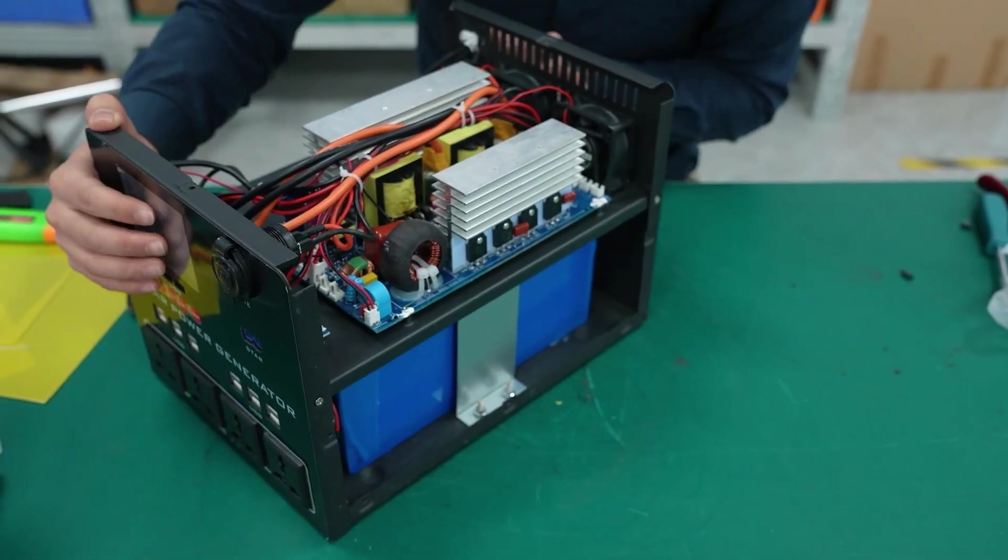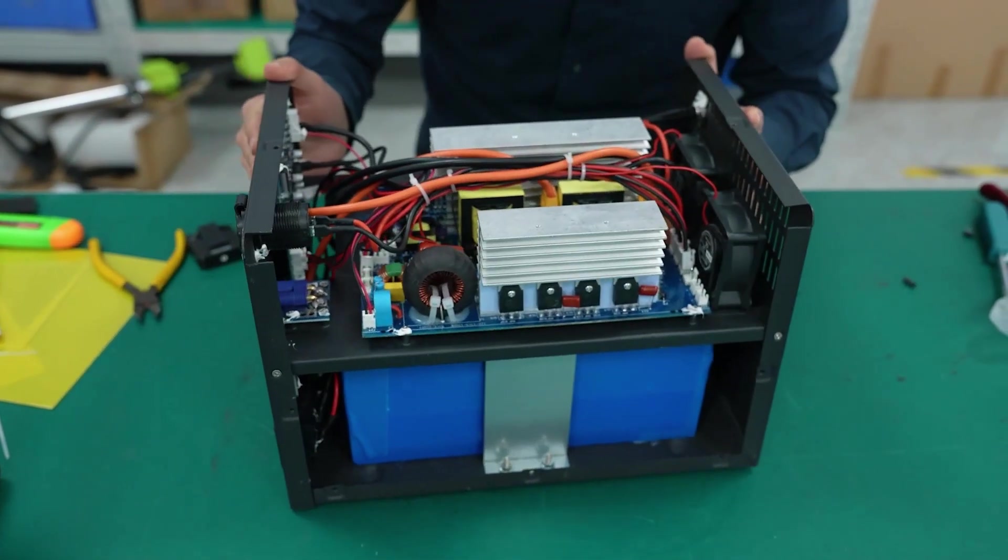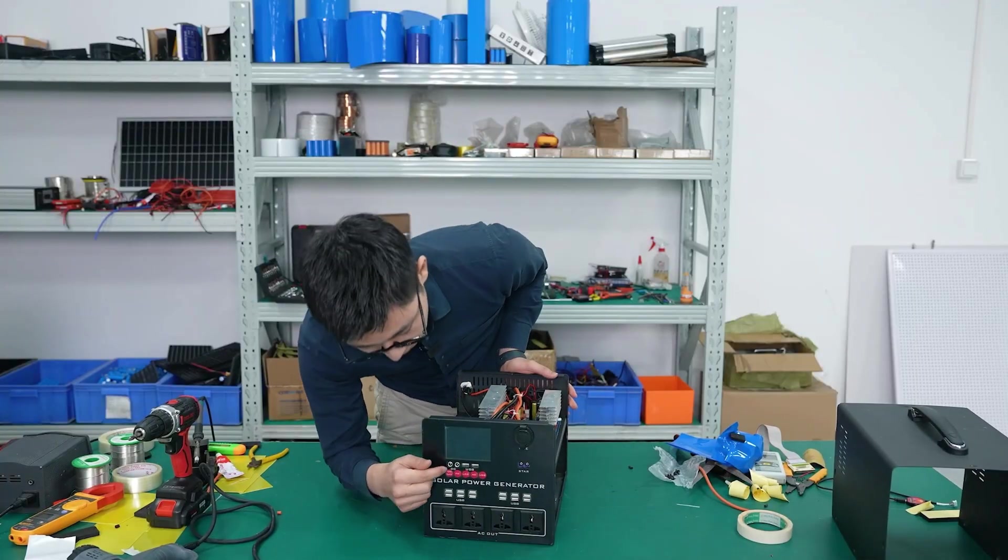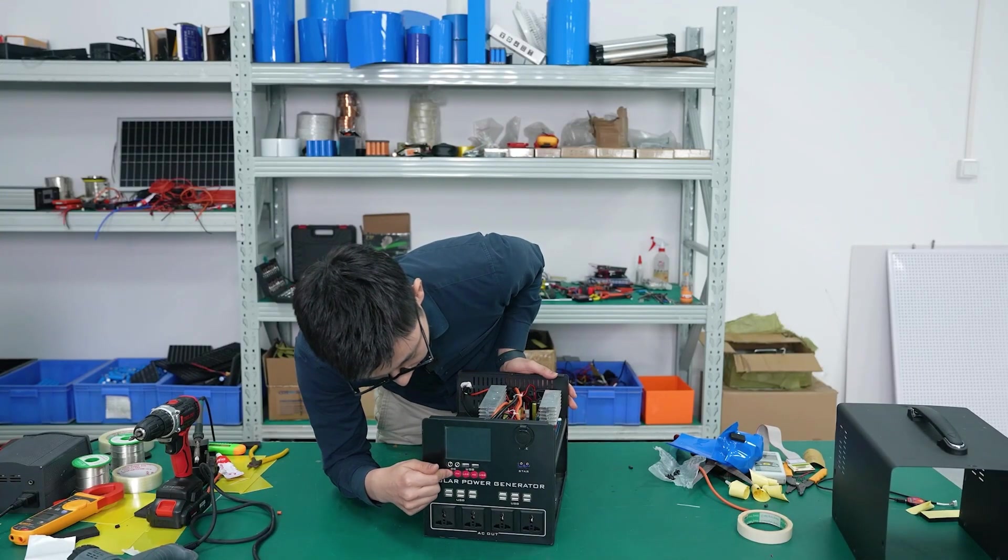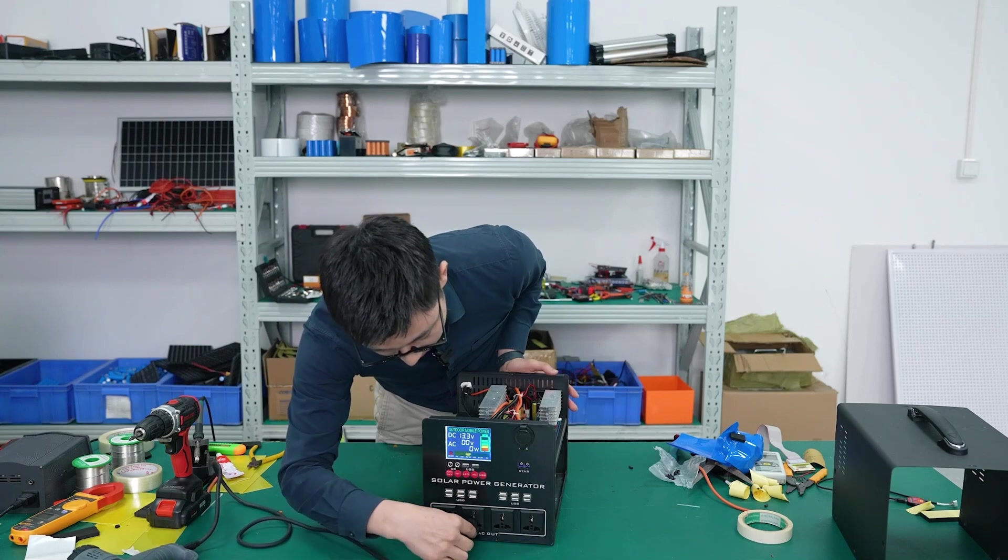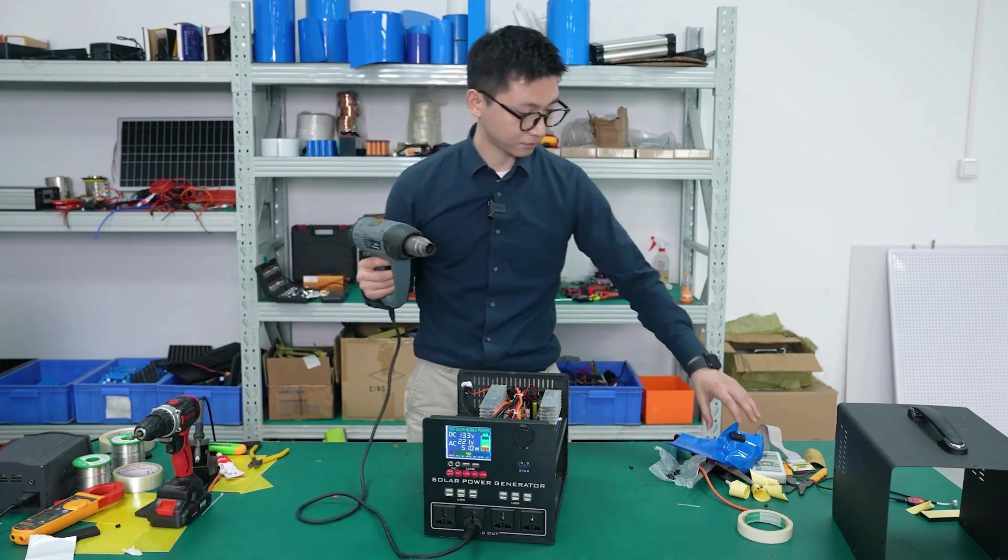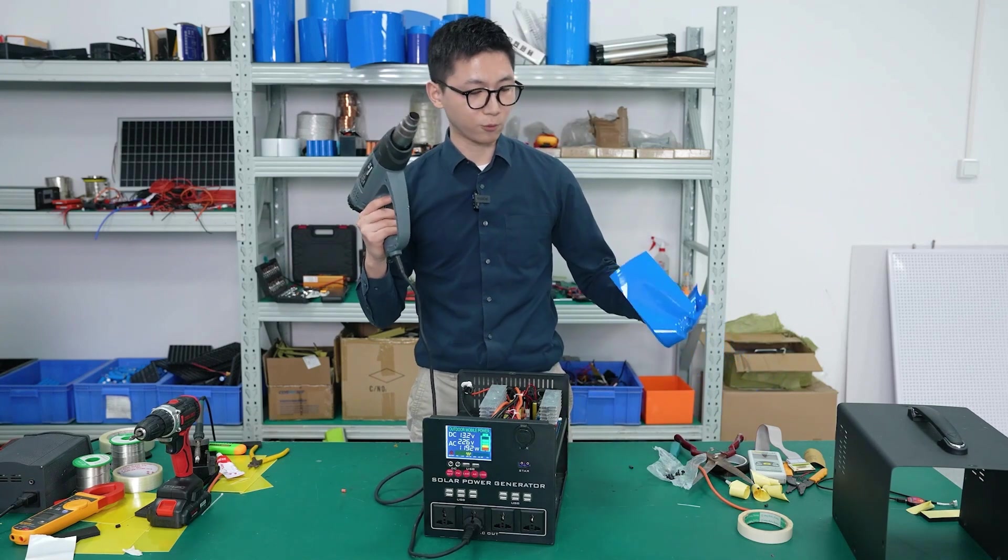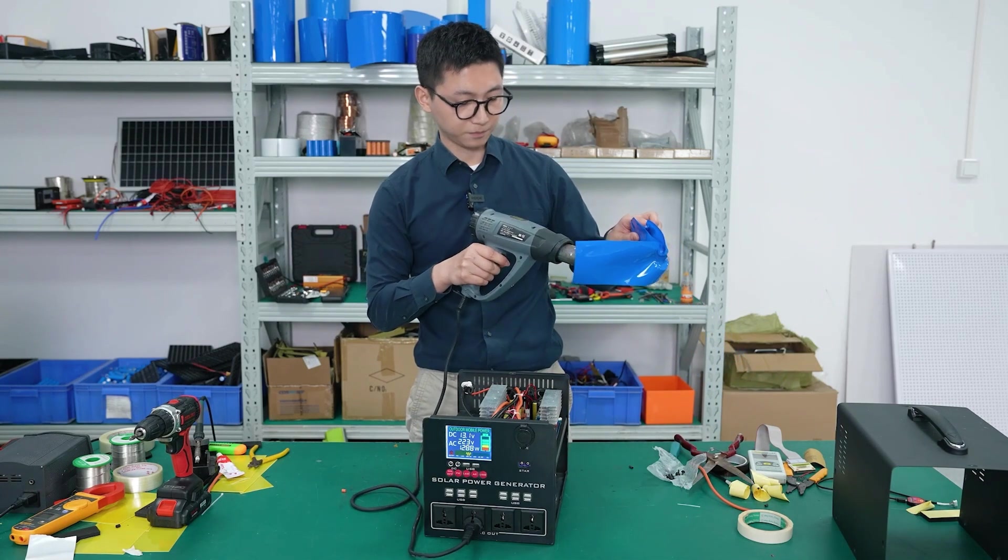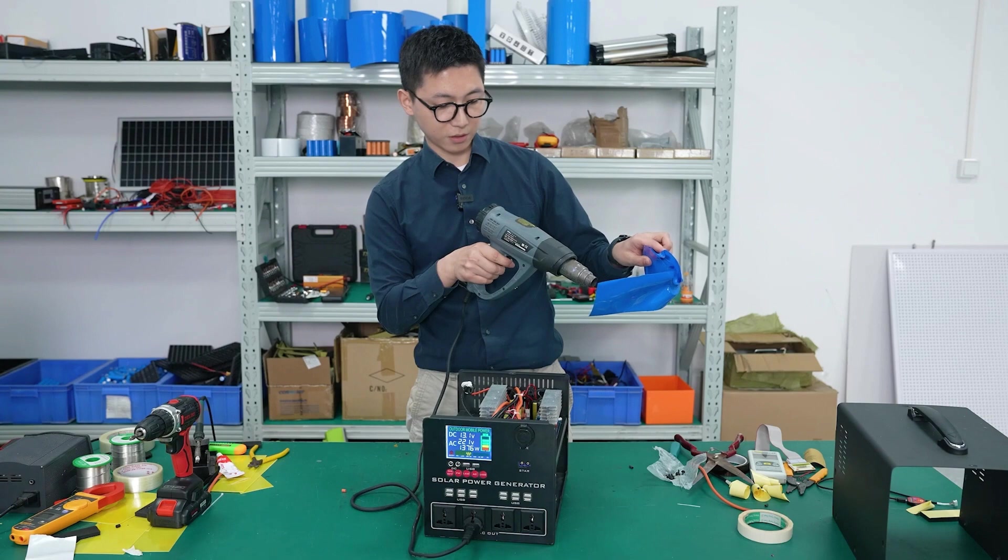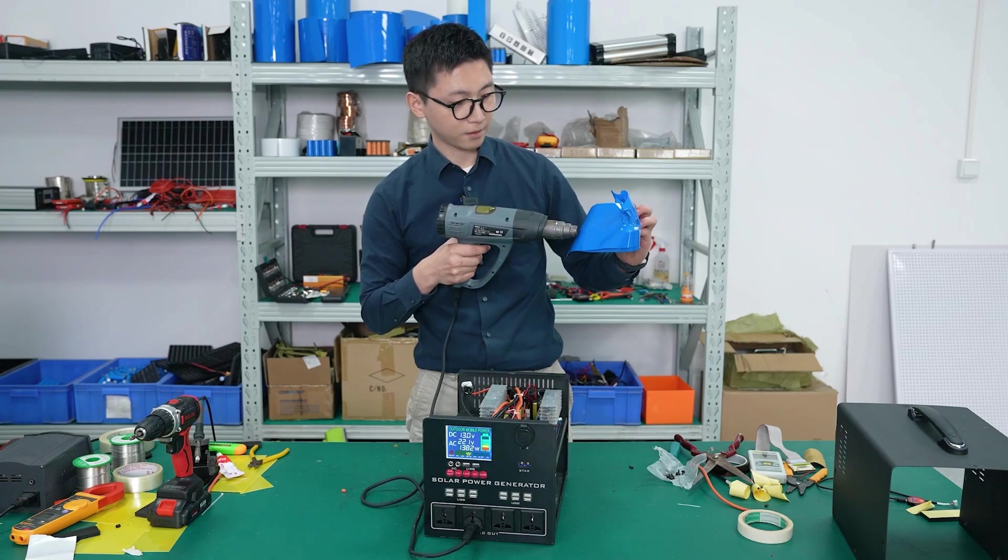This is inside of the outdoor power supply. So we press here the start button and also test the AC part. Let's have the test. Okay, it worked now. The temperature is 300 degrees. Good.